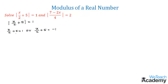Finding x when equated to the positive value 1: transferring +5 to the other side gives x/2 = 1 - 5 = -4. Cross multiplying, we get x = 2 × (-4) = -8.